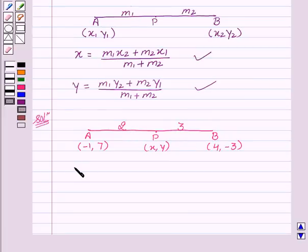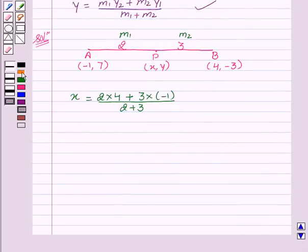Now let us find out by the section formula the coordinates of the point P, that is x. x equals - now m₁ is 2, this is m₁, this is m₂. Now m₁ into x₂: 2 into 4, plus m₂ into x₁, that is 3 into (-1), upon m₁ plus m₂, that is 2 plus 3. So this equals 8 minus 3 upon 5.